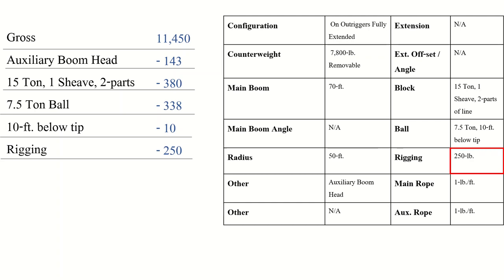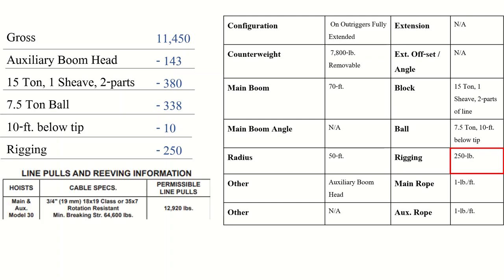At this point we have all the obvious deductions, but we need to make sure our configuration is correct. From page 2, the permissible line pull is 12,920 pounds — meaning a one-part line can safely lift up to 12,920 pounds. Anything above the minimum needed for lifting the load must be deducted. Our gross is 11,450 and the line pull is 12,920, which means we only need a one-part line. But we have two parts equipped, so we need to deduct the extra part of line that we're not using. The problem is we don't know the length of that unneeded part.